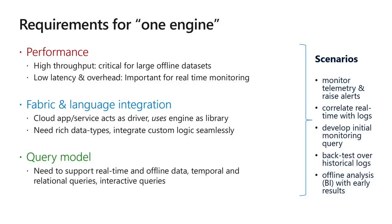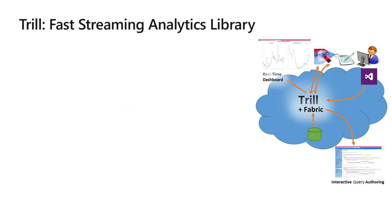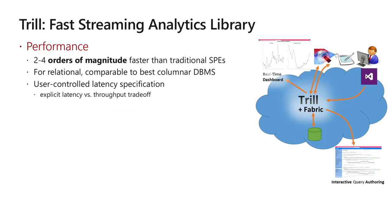The query model Trill supports is a superset of SQL — it supports temporal queries, pattern detection, and related features. In terms of performance, Trill was around two to four orders of magnitude faster than traditional streaming engines at that time. For relational workloads, we achieved performance comparable to the best columnar database systems. We approached this with user-controlled latency specifications — the user says how much latency they tolerate, and we use that for micro-batching and columnarization to straddle the latency-throughput trade-off.